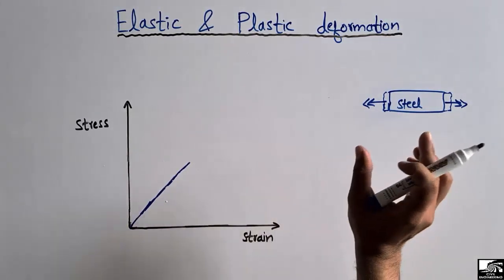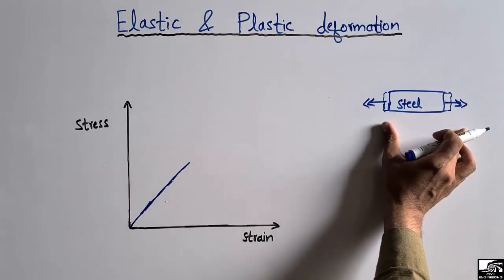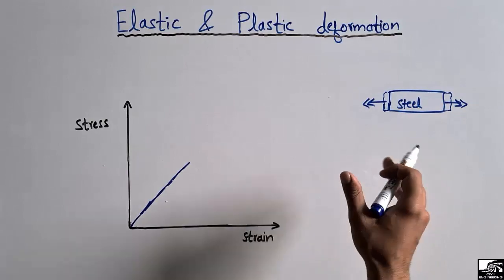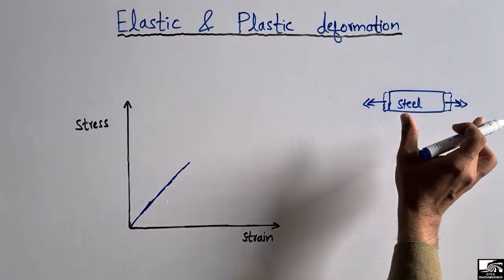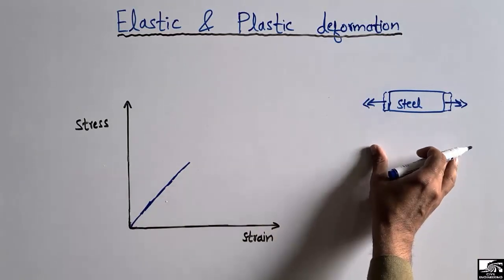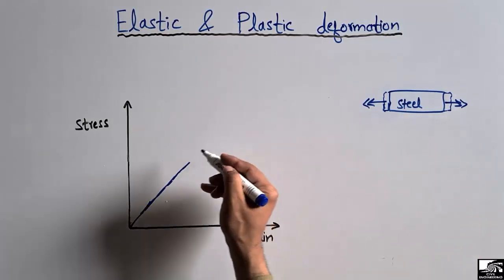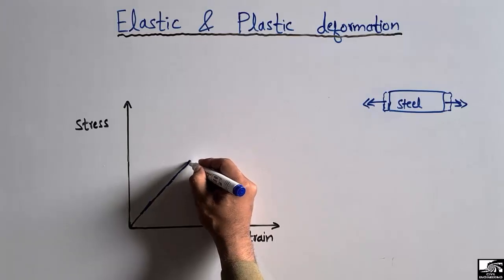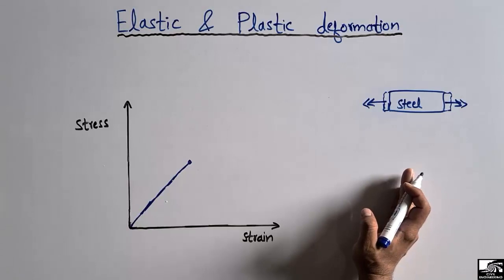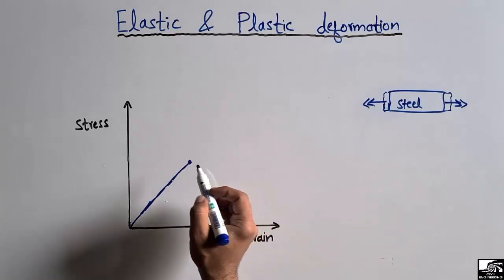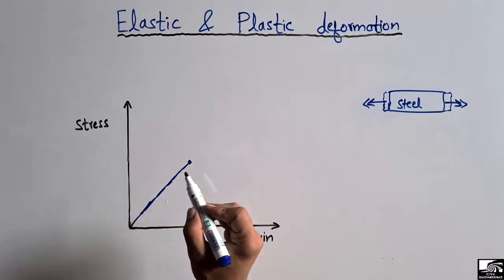Now if I remove this load, the material will come back to its original position. The point where I remove the load and the material returns to its original position — this deformation is known as elastic deformation. Up to this point, the material can return to its original position after removing the load, so this is the elastic deformation region.